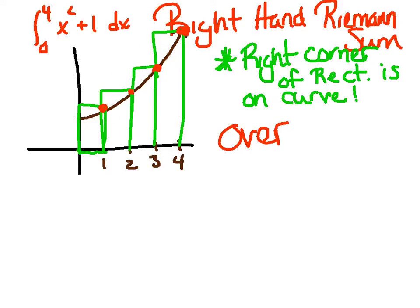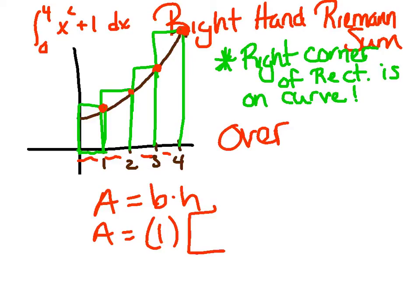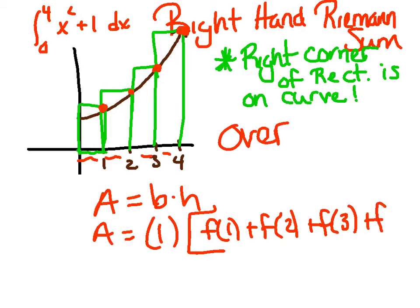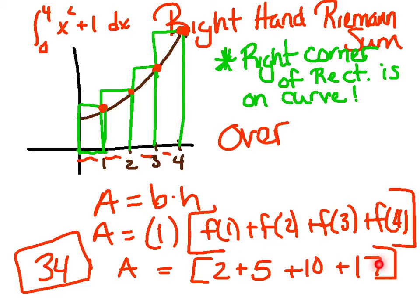Hopefully it's obvious that this one should be an over-approximation — look at all this area you're including that's not even under the curve. We use the same formula, base times height. The bases are all 1, so I pull that out as my GCF right from the beginning. This time, you're not going to use f of 0 — that's not actually on the curve. The first value on the curve is f of 1, then f of 2, f of 3, f of 4. Four sub-intervals, four terms. Evaluating gives me 2, 5, 10, 17 — add those up, final area of 34, which is an over-approximation.